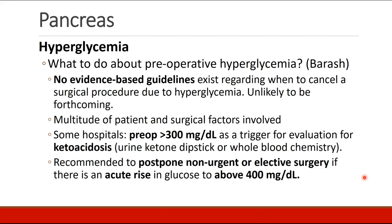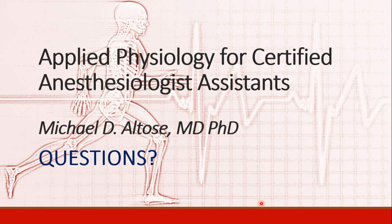This is a big and ongoing question, and you'll find a lot of different recommendations and guidelines. Looking at Barash's anesthesia textbook, there are really no evidence-based guidelines existing currently as far as when you should cancel a surgical procedure due to hyperglycemia, and these evidence-based guidelines are unlikely to be forthcoming given the many patient and surgical factors involved. Some hospitals have a policy that if the pre-op blood sugar is greater than 300, this will serve as a trigger to evaluate the patient for ketoacidosis, including a urine ketone dipstick or whole blood chemistry. There are those who recommend postponing non-urgent or elective surgery if there is an acute rise in glucose to above 400 milligrams per deciliter. We'll stop our discussion of diabetes here and continue it in the next recording.